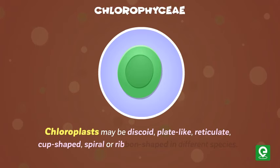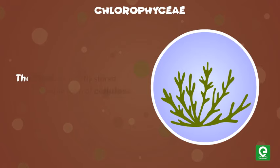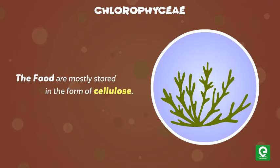Chloroplasts may be discoid, plate-like, reticulate, cup-shaped, spiral, or ribbon-shaped in different species. The food is mostly stored in the form of starch.